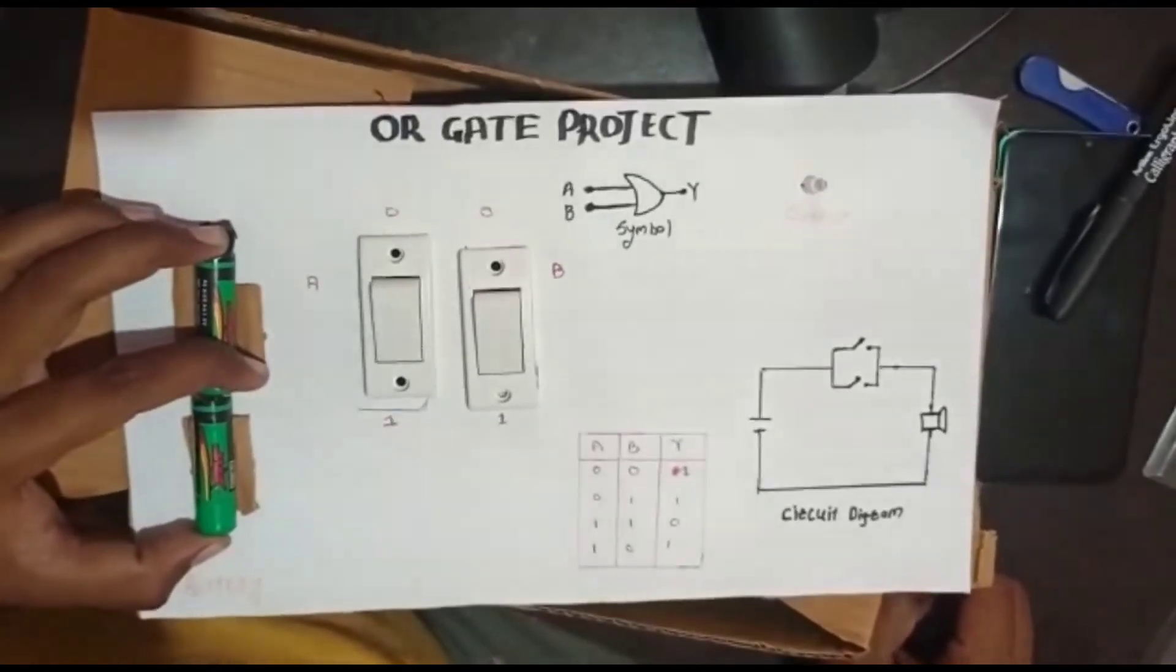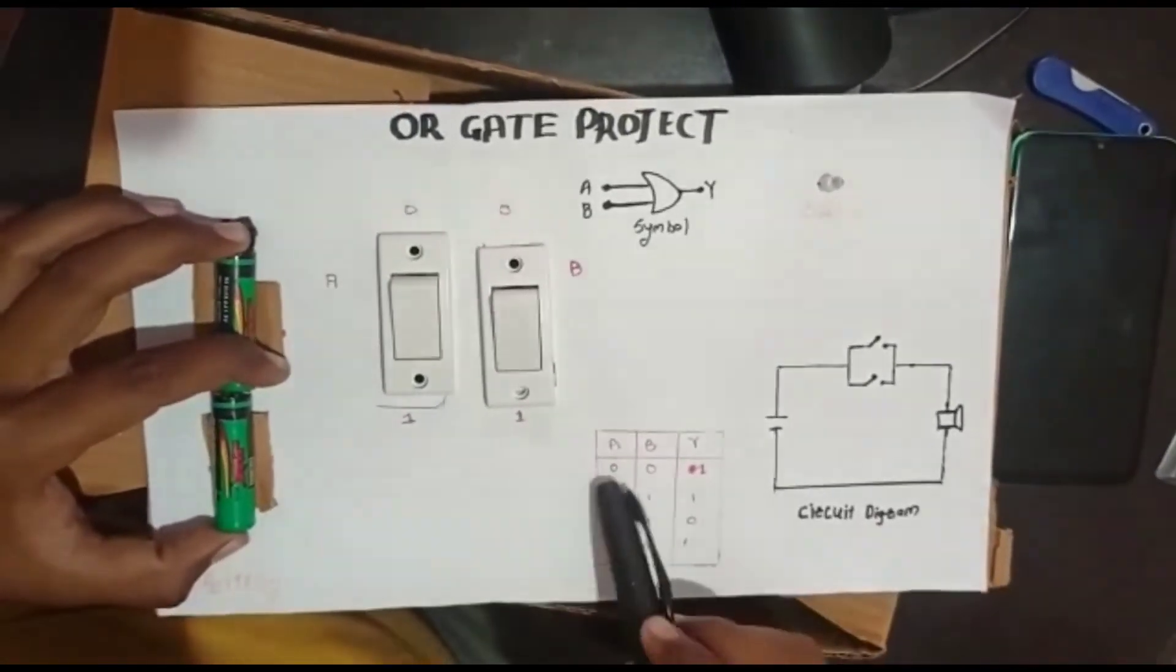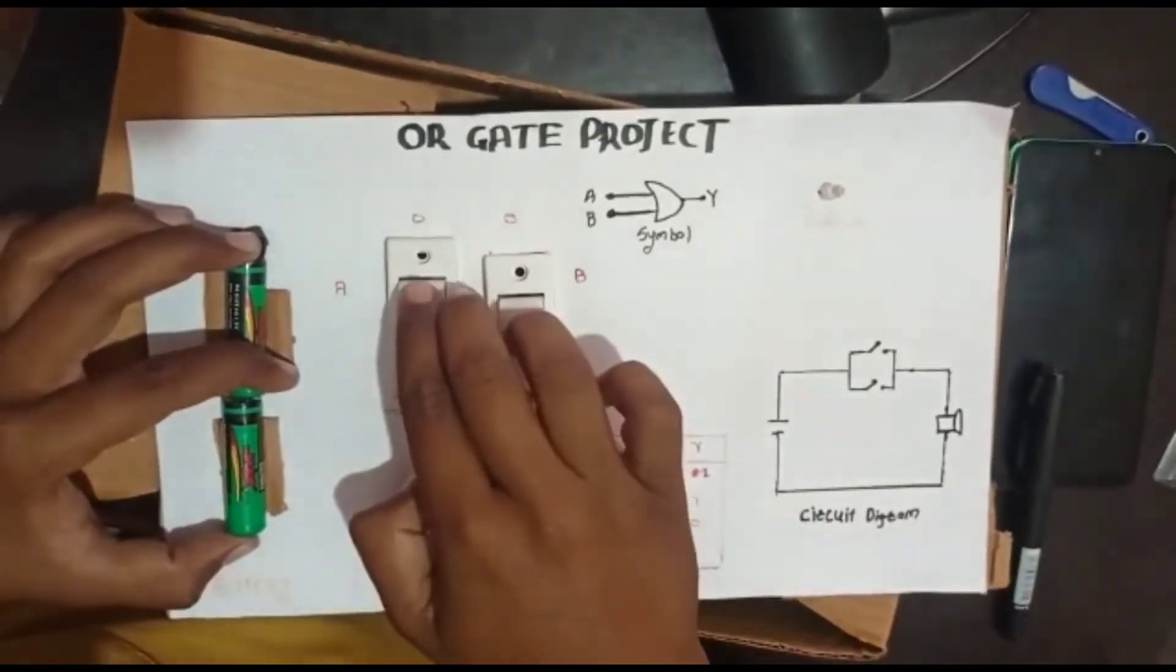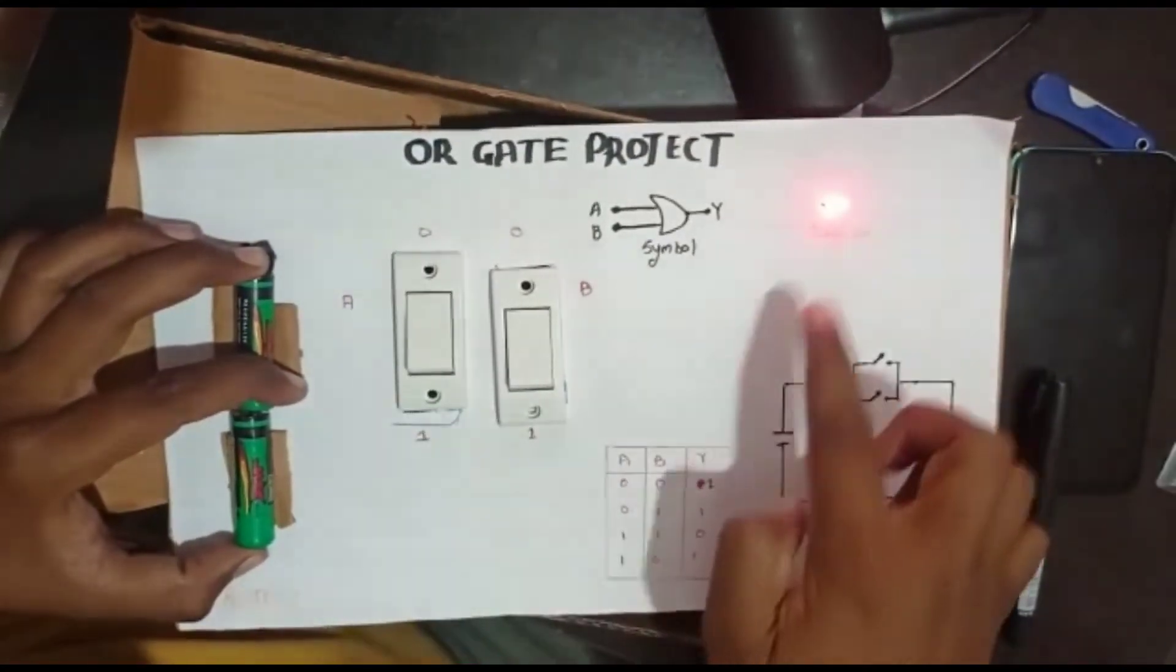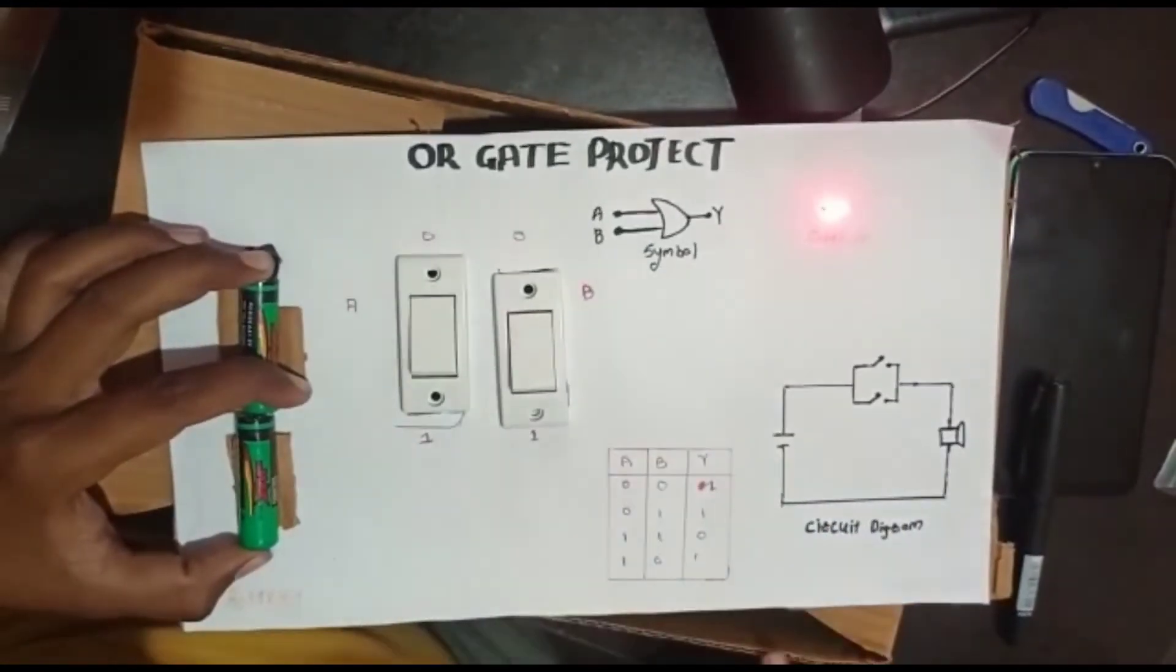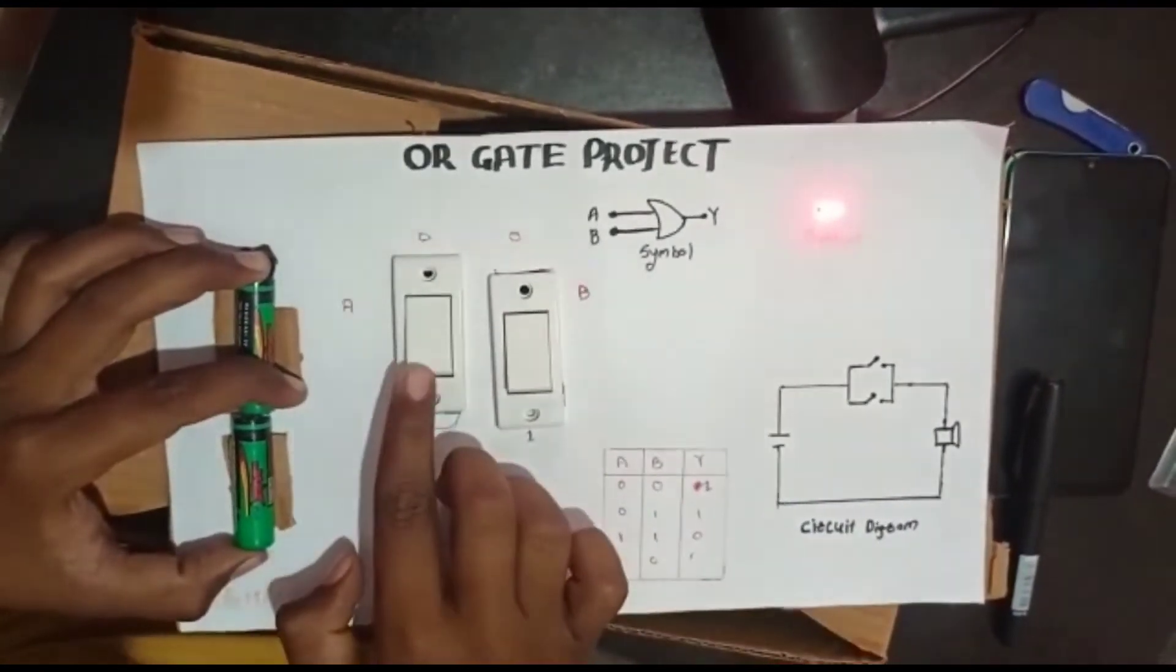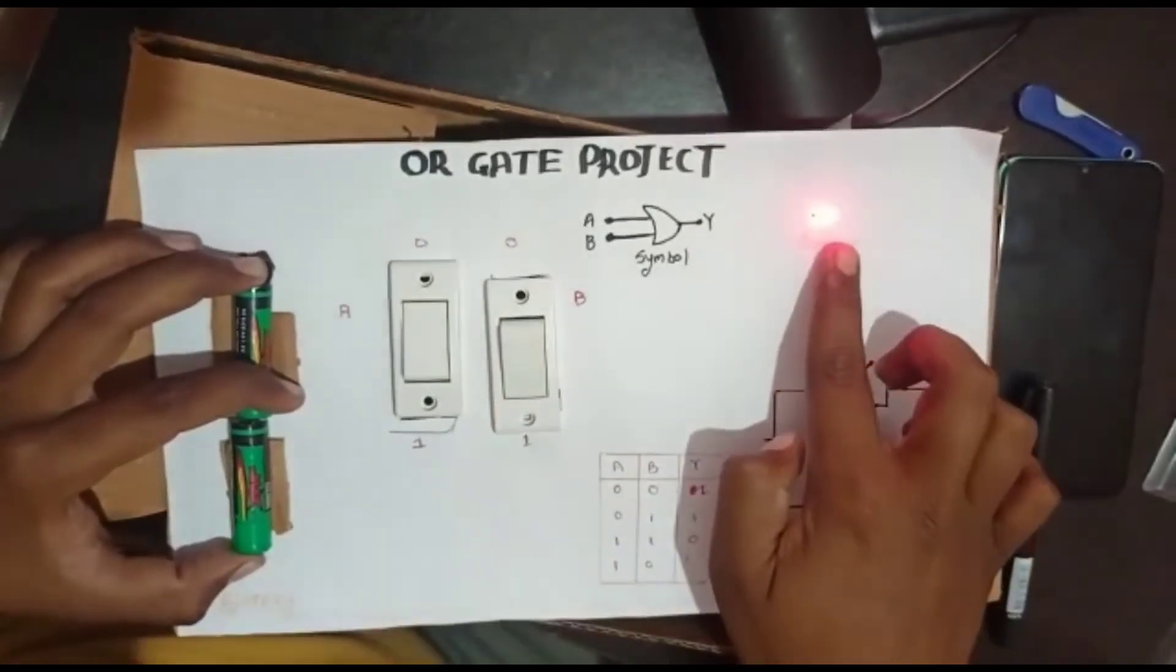In this project, we require two switches, wire, LED, and battery. Here, we connect all the components. The OR GATE is a type of digital logic circuit where the output goes high to logic level 1 only when one or more of its inputs are high.